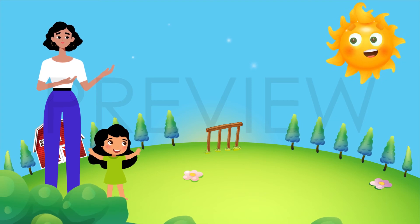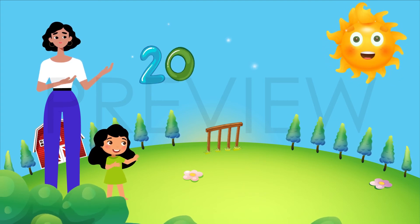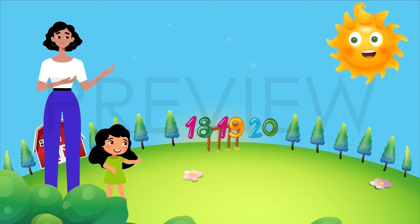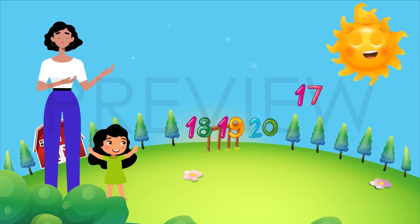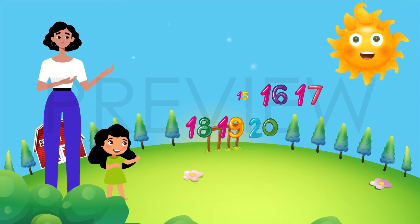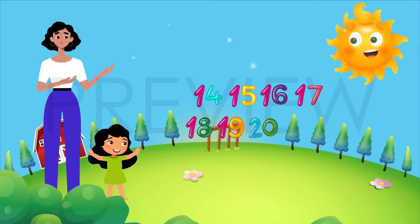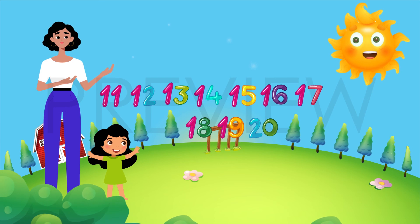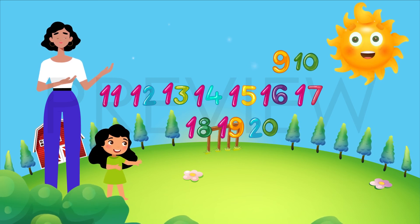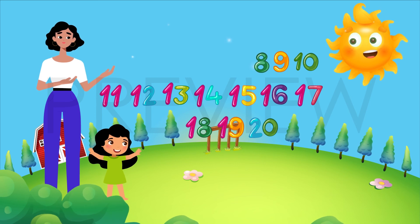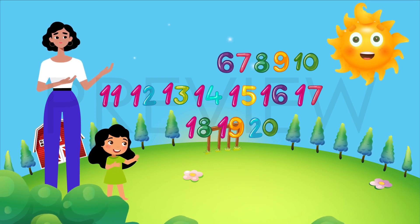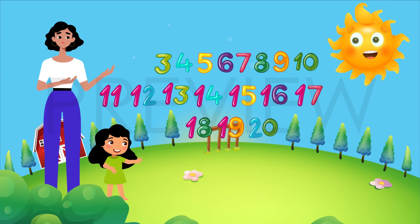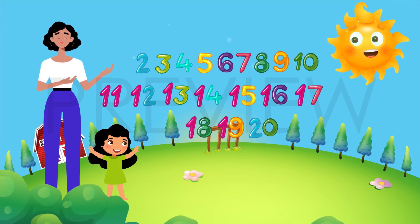Okay, kids. Now, we'll be counting backwards from 20 to 1. 20, 19, 18, 17, 16, 15, 14, 13, 12, 11, 10, 9, 8, 7, 6, 5, 4, 3, 2, 1.